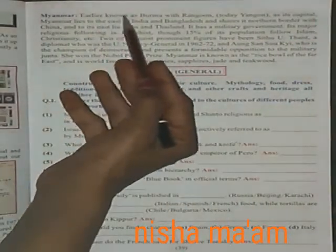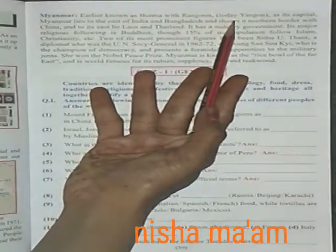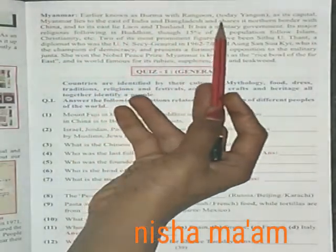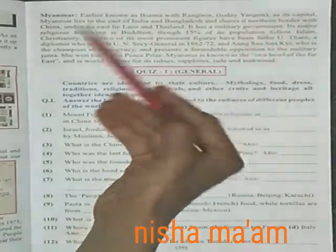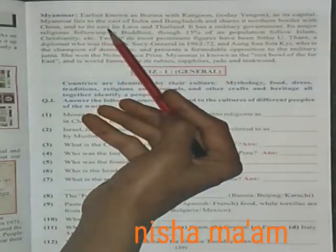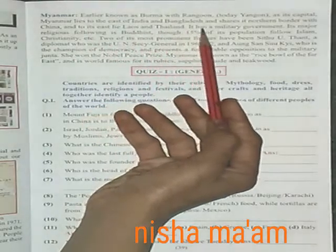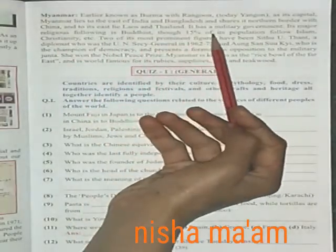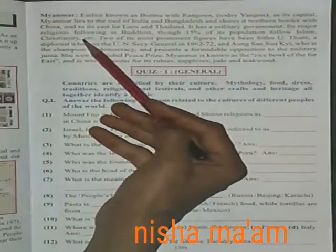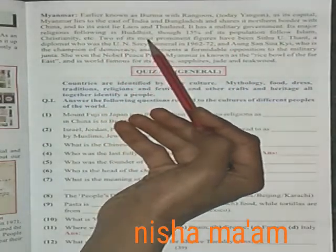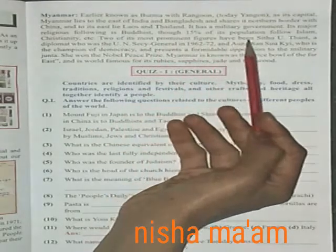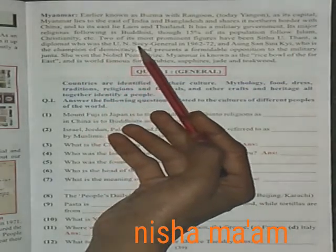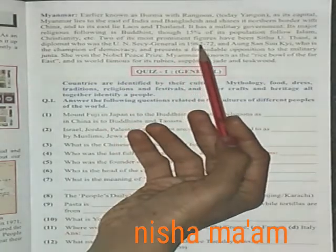Myanmar, earlier known as Burma, with Yangon as its capital, lies to the east of India and Bangladesh and shares its northern border with China; to its east lie Laos and Thailand. It has a military government. Its major religious following is Buddhist, though 15% of its population follows Islam and Christianity. Two of its most prominent figures have been U Thant, a diplomat who was the UN Secretary General from 1962 to 1972.